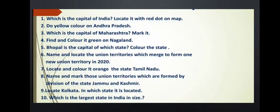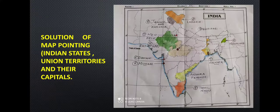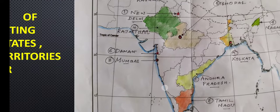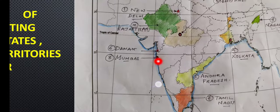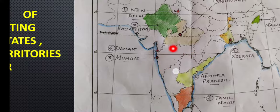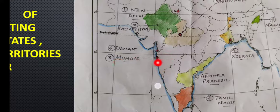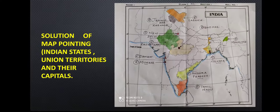The next question is: which is the capital of Maharashtra and mark it? The capital of Maharashtra is Mumbai. Mumbai is also the economic capital or the commercial capital of our country. Here is the city Mumbai along the coast, and it is present in Maharashtra. I have already pointed out Mumbai and this is the answer of the third one.